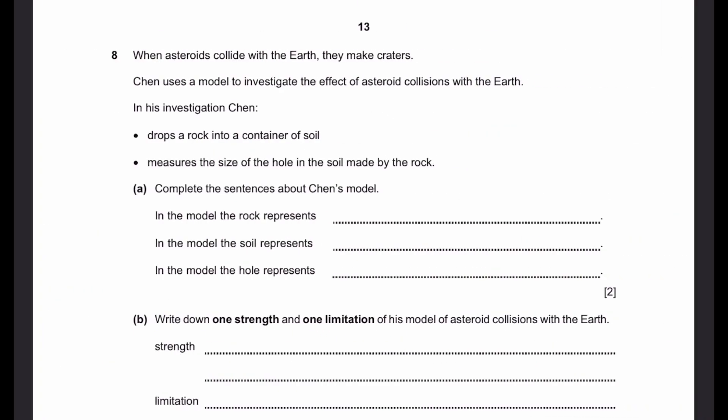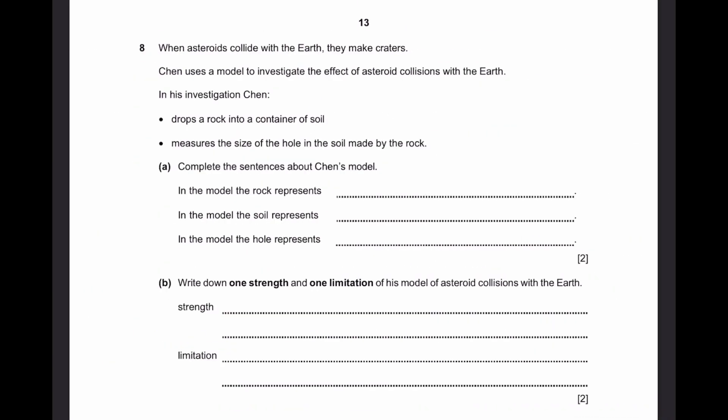Let's go to question 8. When asteroids collide with the Earth, they make craters. Chen uses a model to investigate the effect of asteroid collisions with the Earth. In his investigation, Chen drops a rock into a container of soil and measures the size of the hole in the soil made by the rock. Complete the sentences about Chen's model.